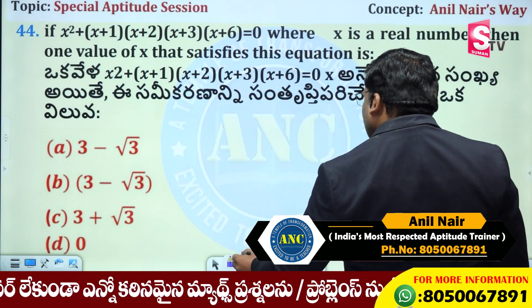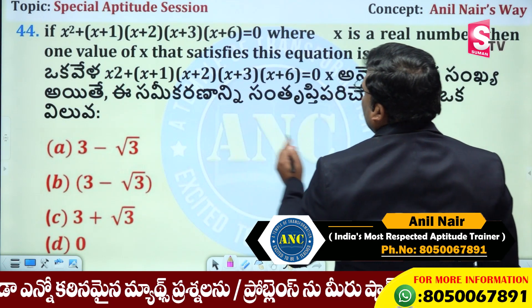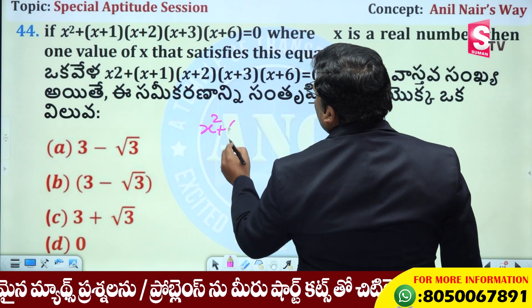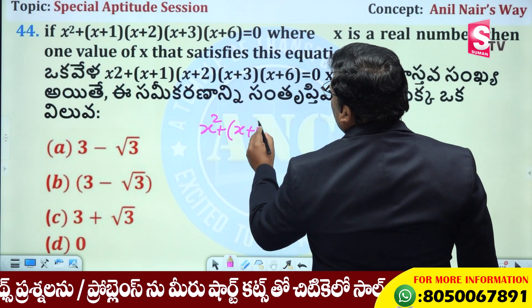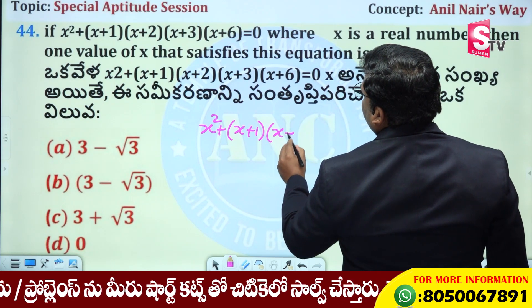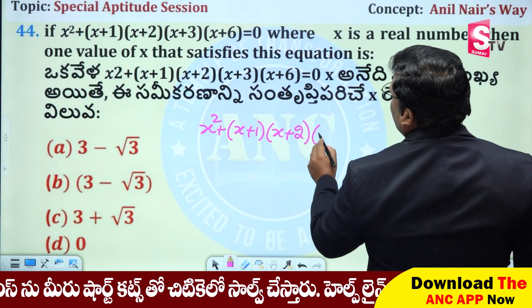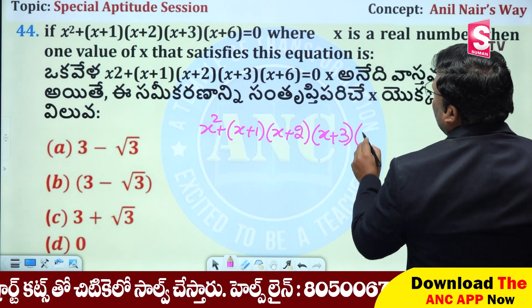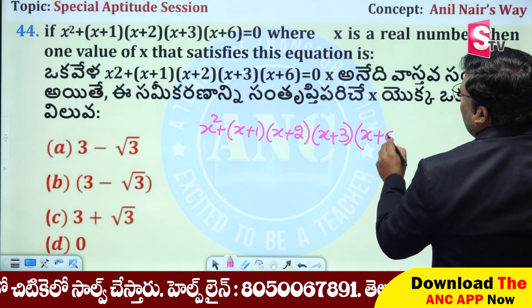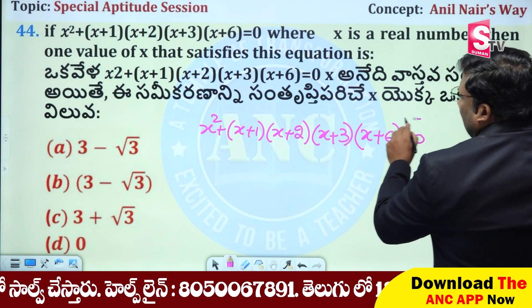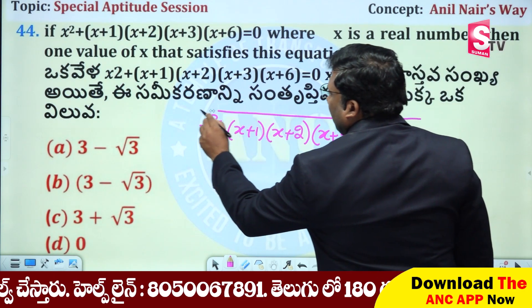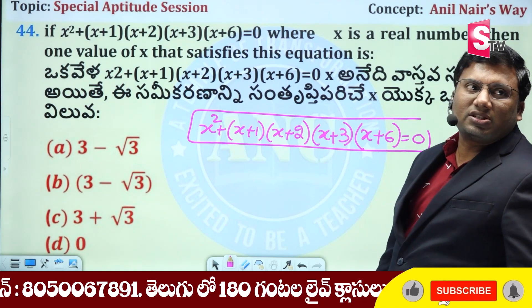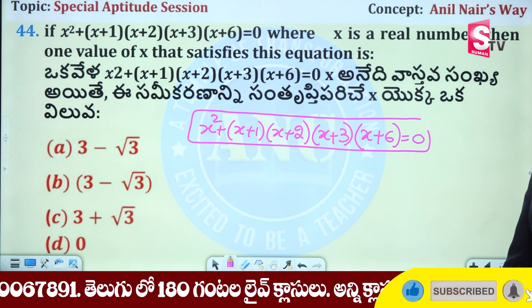There is one equation: (x² + x + 1)(x + 2)(x + 3)(x + 6) = 0. This is the equation.